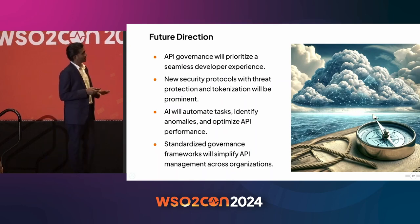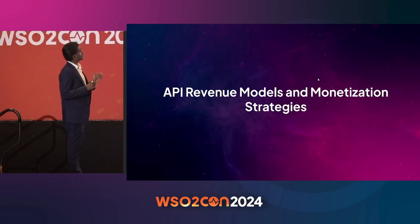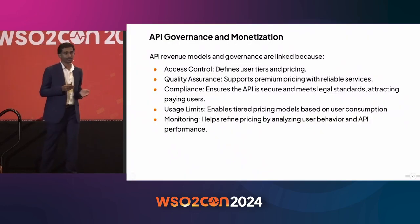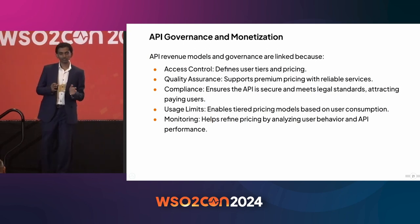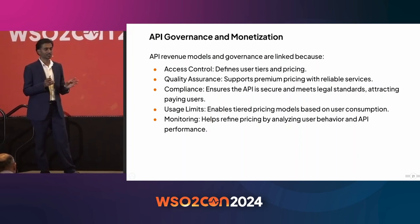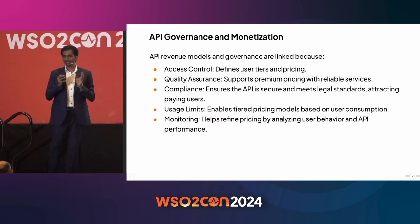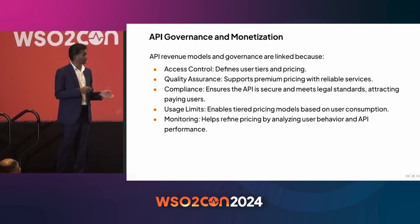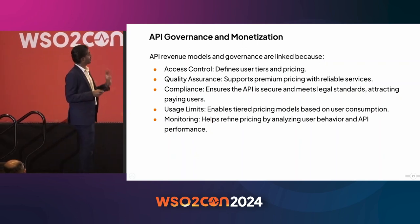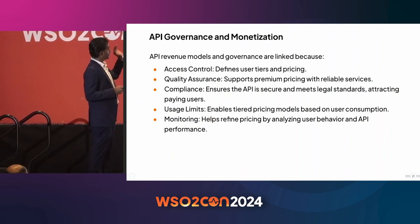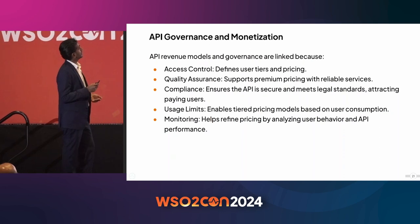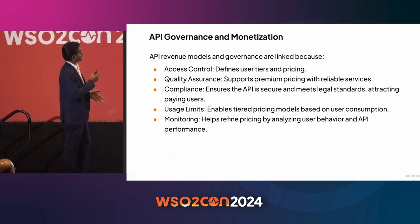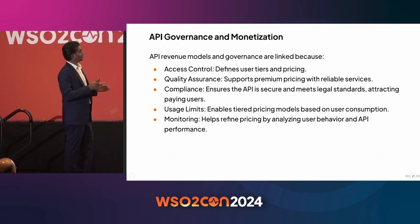Now let me discuss API revenue models and monetization. API monetization and governance always go hand-in-hand. If you want to sell something, you need to govern it properly — nobody will buy from you if you can't guarantee delivery or if the APIs aren't secure enough. When implementing a proper revenue model around APIs, you need to focus on access control, quality assurance, compliance, usage limits, and monitoring. All of these are directly related to governance.